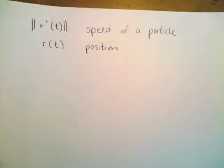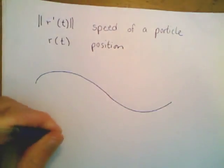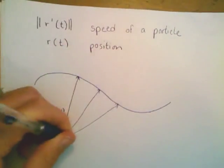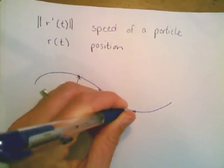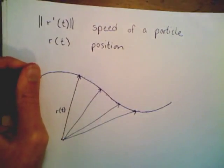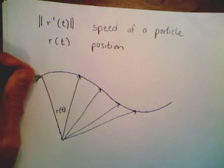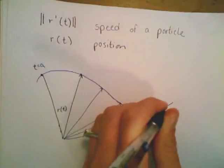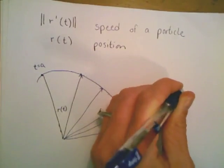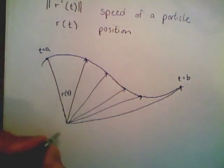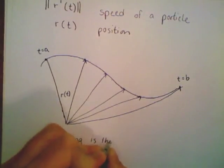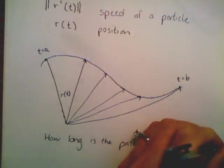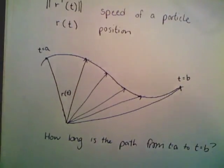We have a vector-valued function tracing out a space curve, and we have a collection of vectors making up the function r of t. As t moves along, the particle travels through space. Arc length measures the length of this path — from where t equals a all the way until t equals b.